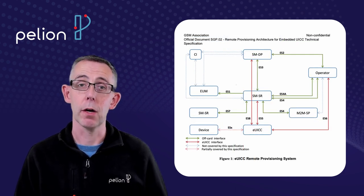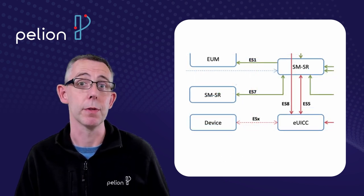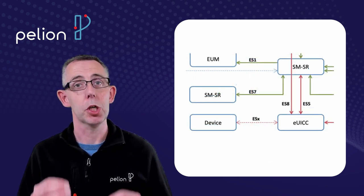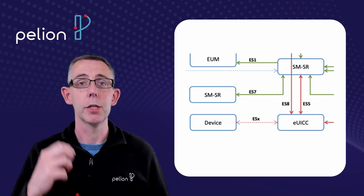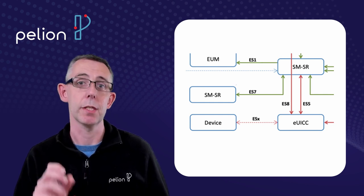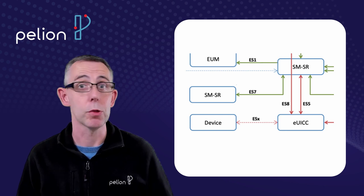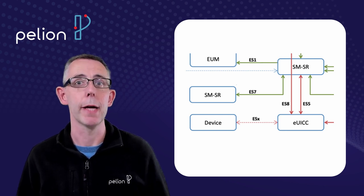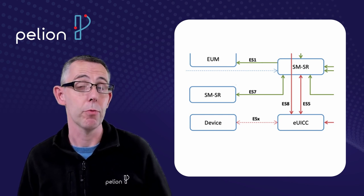At the bottom of that diagram you can see the EUICC and the device and that's the piece that you're going to be working with, that's your product. The secure routing element will download a new profile to the EUICC in your device. This means you don't have to do any physical changes.